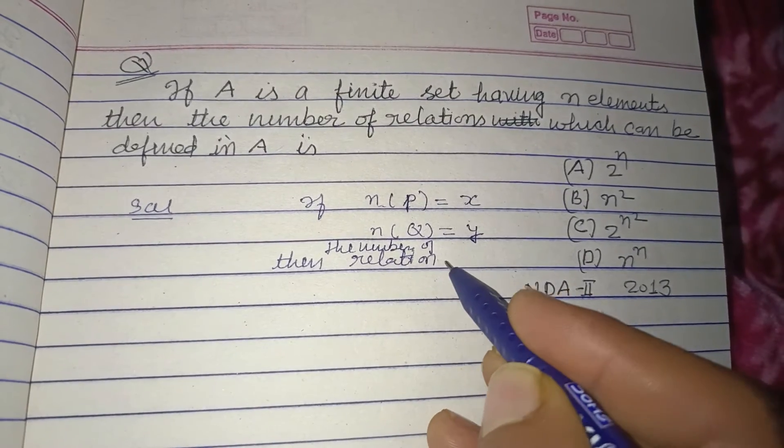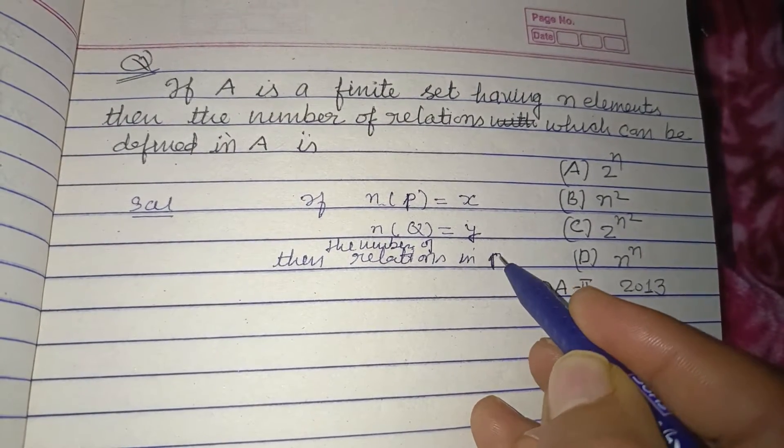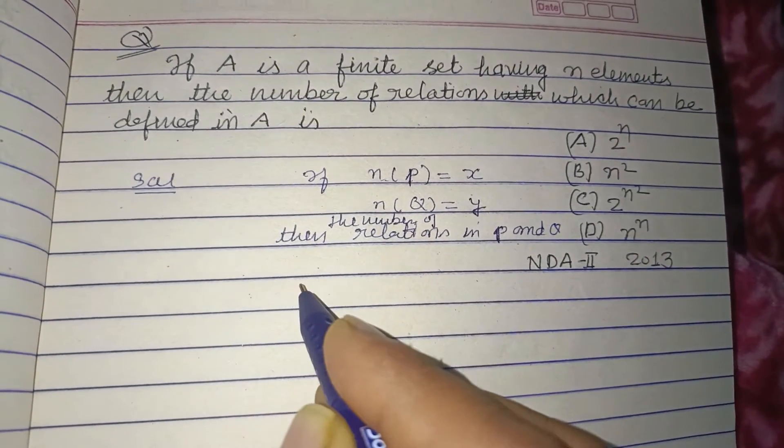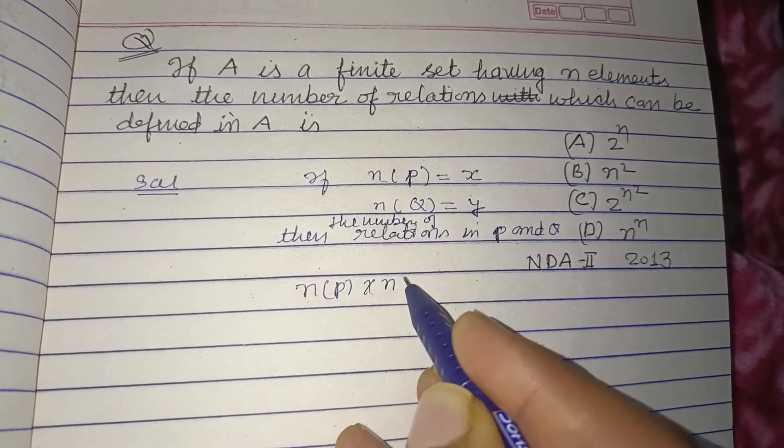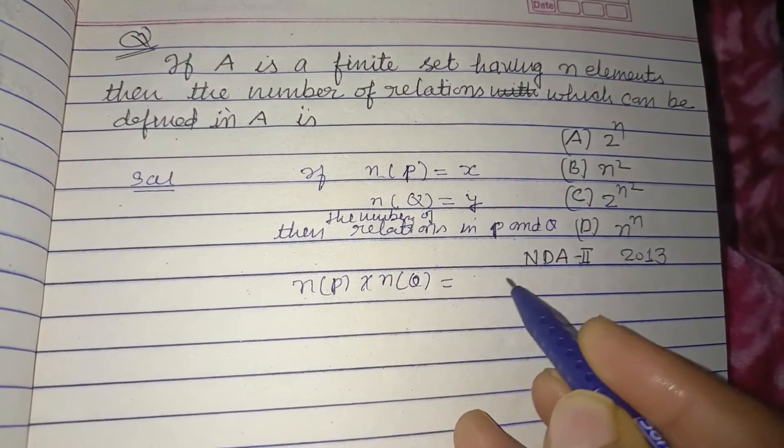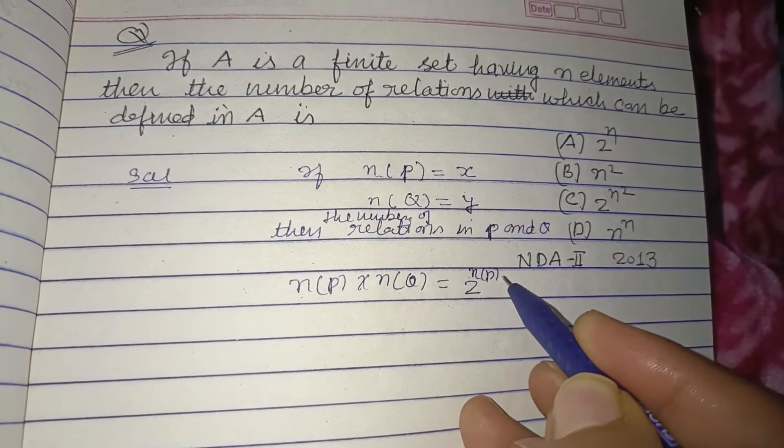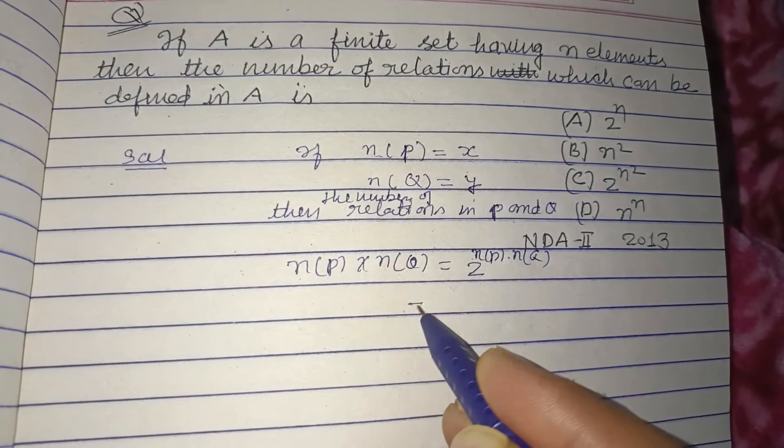number of relations in P and Q, so this is n(P) × n(Q), and this is equal to 2 to the power n(P) into n(Q).